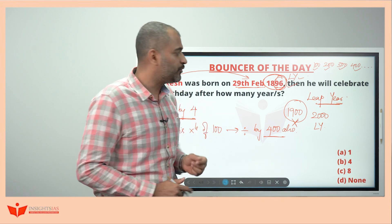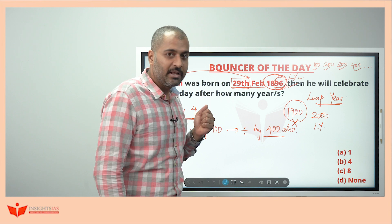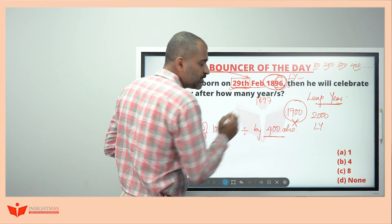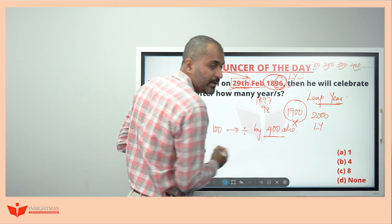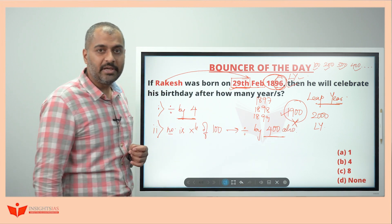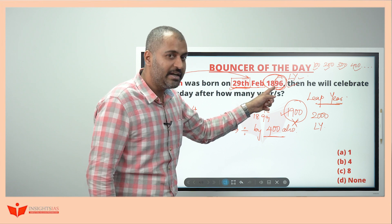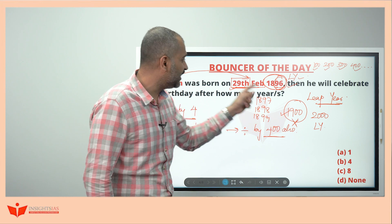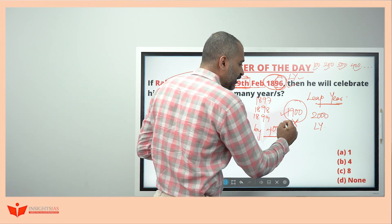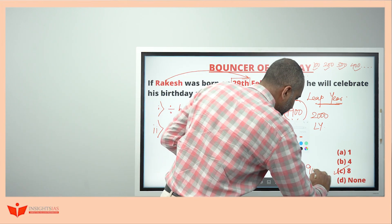When there is a leap year, you have one extra day which falls on 29th February. Next year 1897, you don't have 29th February. 1897, 1898, 1899 are not leap years. And 1900 is also not a leap year. After every 4 years one leap year comes. Rakesh was born in 1896 and was planning to celebrate his birthday on 29th February 1900, but in 1900 there is no 29th February. Hence he has to wait another 4 years — till 1904, 29th February.